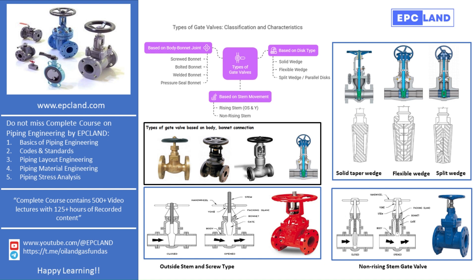To summarize, gate valves can be classified based on disc type, body-bonnet connection, and stem movement. Each type has its own use depending on the pressure, temperature, and space availability in a piping system. Understanding these types helps engineers choose the right valve for the right application.